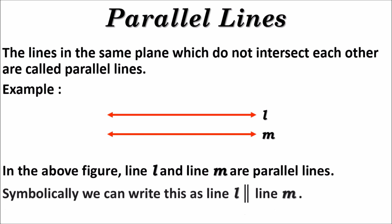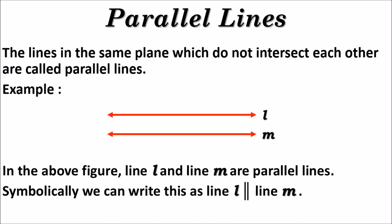Symbolically we can write this as line L parallel line M. You can see there are two vertical lines — that is the symbol for parallel lines. So we say that line L is parallel to line M.